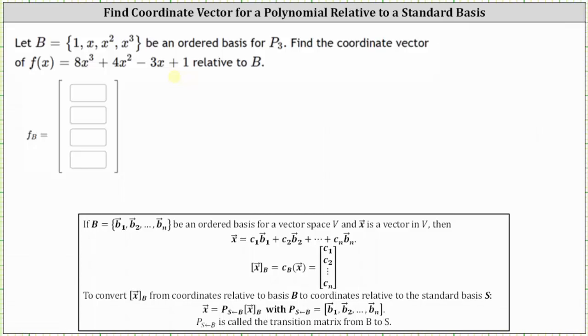Looking at the notes below, if the set B is an ordered basis for a vector space V and vector x is a vector in V, then vector x is equal to some linear combination of the vectors in set B. And the coordinate vector relative to B is made up of the scalars.